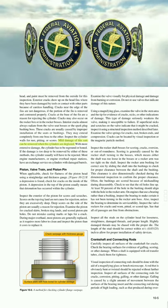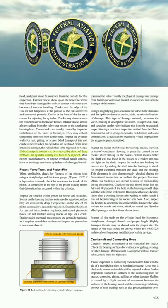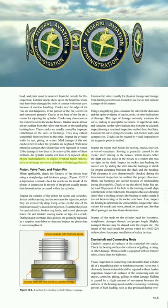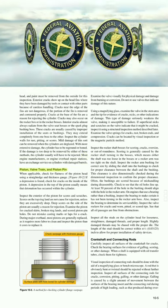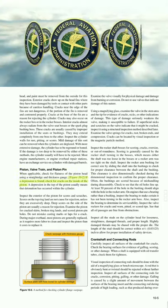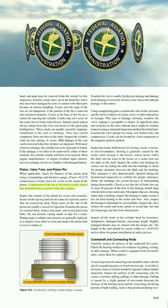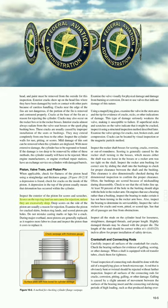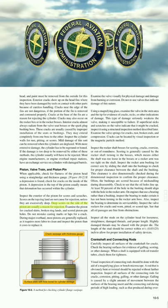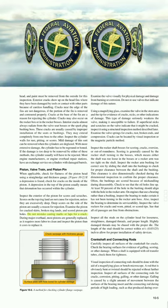Inspect cylinder walls for rust, pitting, or scores. Mild damage can be removed when the cylinders are deglazed. With more extensive damage, the cylinder has to be reground or rehoned. If the damage is too deep to be removed by either method, the cylinder will have to be rejected. Most engine manufacturers or engine overhaul repair stations have an exchange service on cylinders with damaged barrels. Piston, valve train, and piston pin: When applicable, check for flatness of the piston head using a straight edge and thickness gauge. If a depression is found, check for cracks on the inside of the piston — a depression usually indicates detonation within the cylinder. Inspect the exterior of the piston for scores and scratches. Scores on the top ring lands are not cause for rejection unless excessively deep. Deep scores on the side of the piston are usually a reason for rejection. Examine the piston for cracked skirts, broken ring lands, and scored piston pin holes. During major overhaul, most pistons are generally replaced, as it requires more labor to clean and inspect the piston than it costs to replace it.